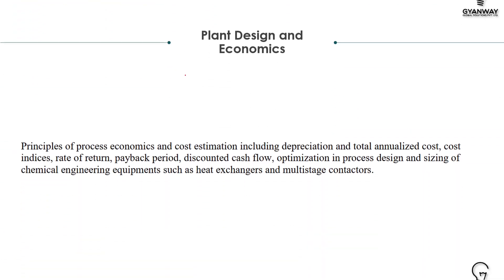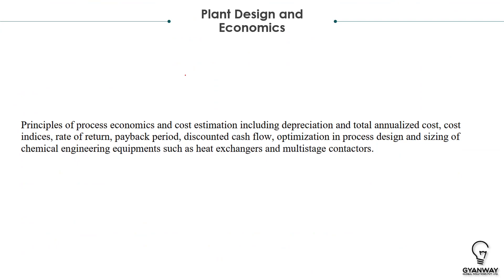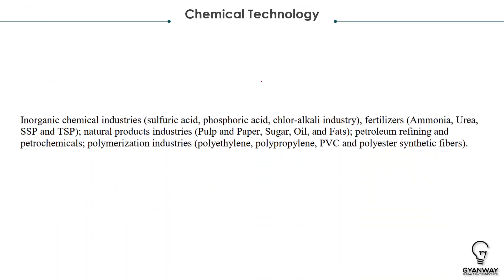Plant Design and Economics is a short subject with a weightage of around 4 to 6 marks. Topics include principles of process economics, cost estimation, total annualized cost, cost indices, rate of return, payback period, discounted cash flow, optimization, process design, and design of equipment such as heat exchangers and multi-stage contactors. It's a very easy subject that boosts your GATE score, but students often skip it — don't do that.